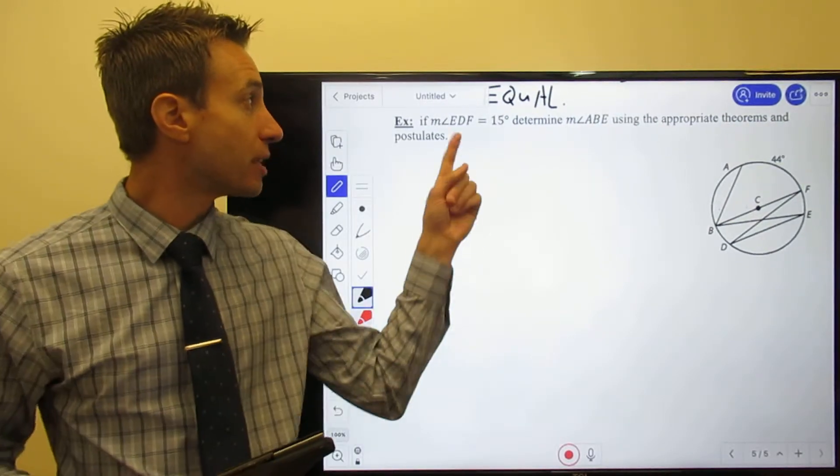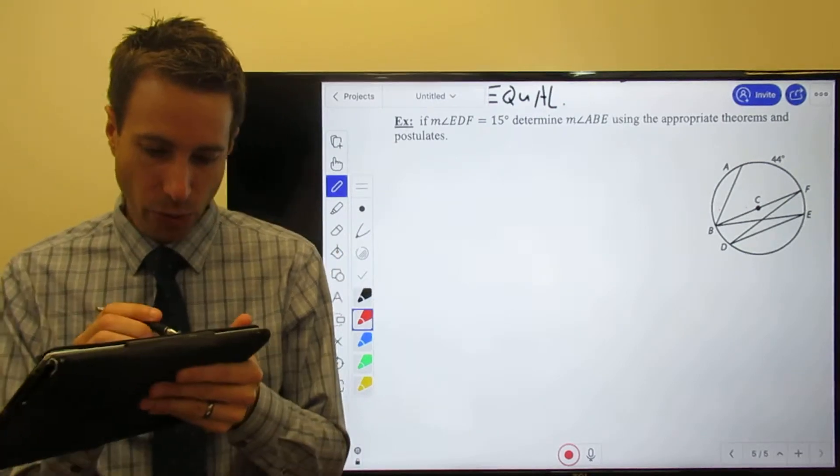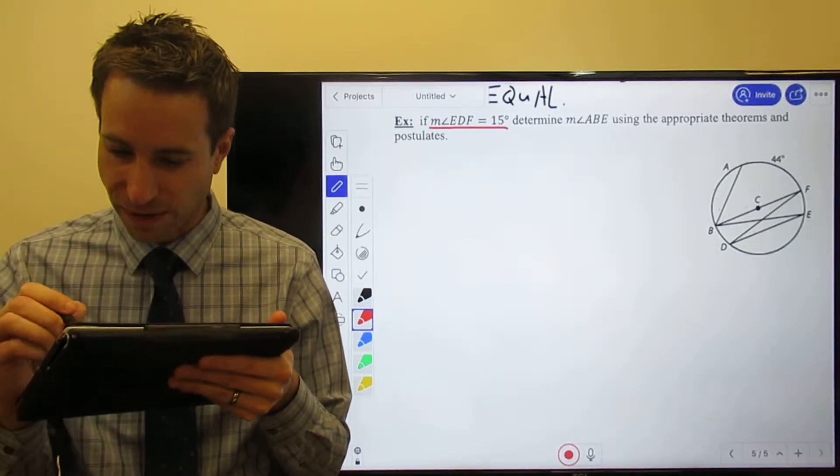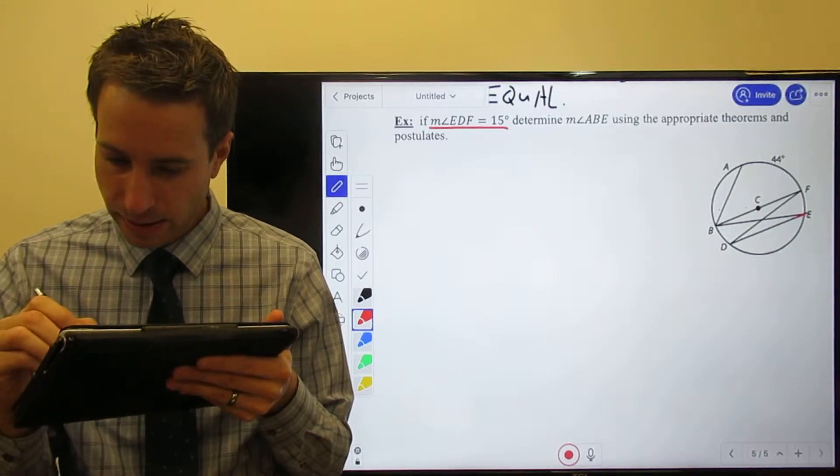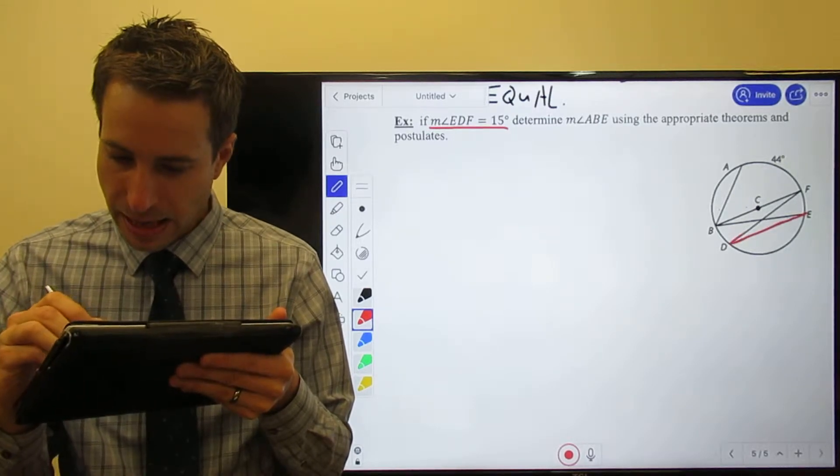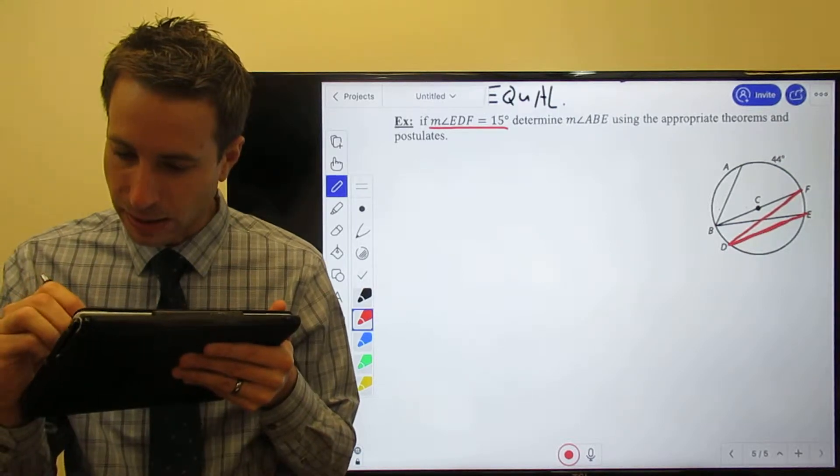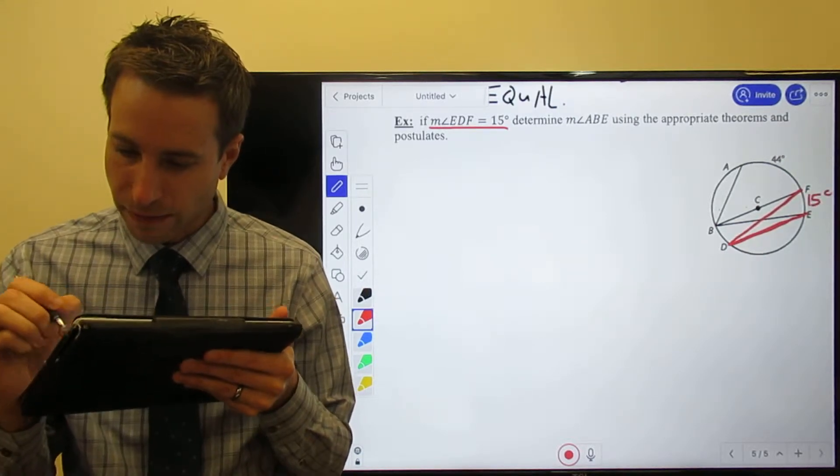All right, here's what I tell you. I tell you that the measure of EDF is 15 degrees. Let's find it. E, D, F. That guy right there is 15 degrees.